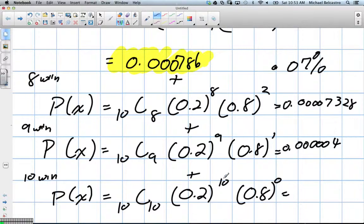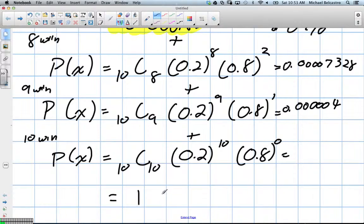10C10, I believe, is 1. So really, and 0.8 to the power of 0 is 1. So this is 1 times 0.2 to the power of 10 times 1 again. So 0.2 to the power of 10. Extremely small decimal. So 3, 4, 5, 6.